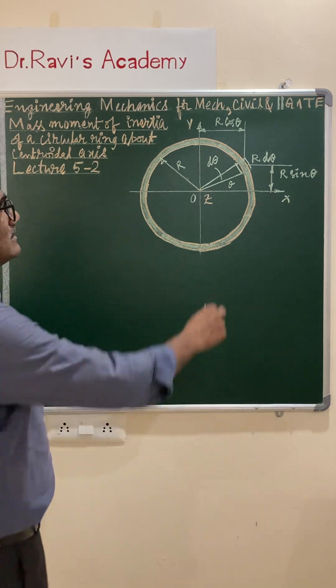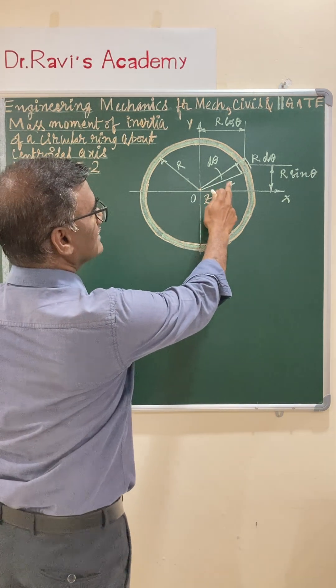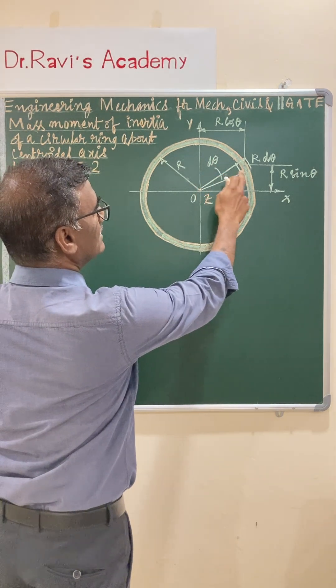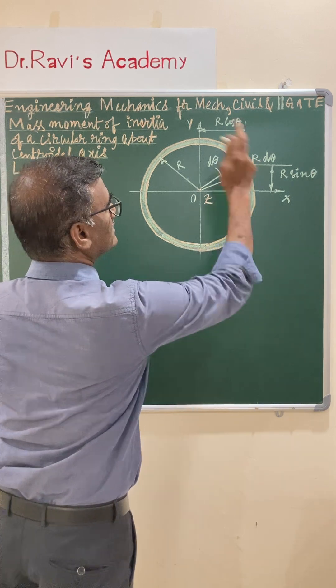For this, let us consider an element at an angle theta. The integral angle is dθ and this element length is r dθ.